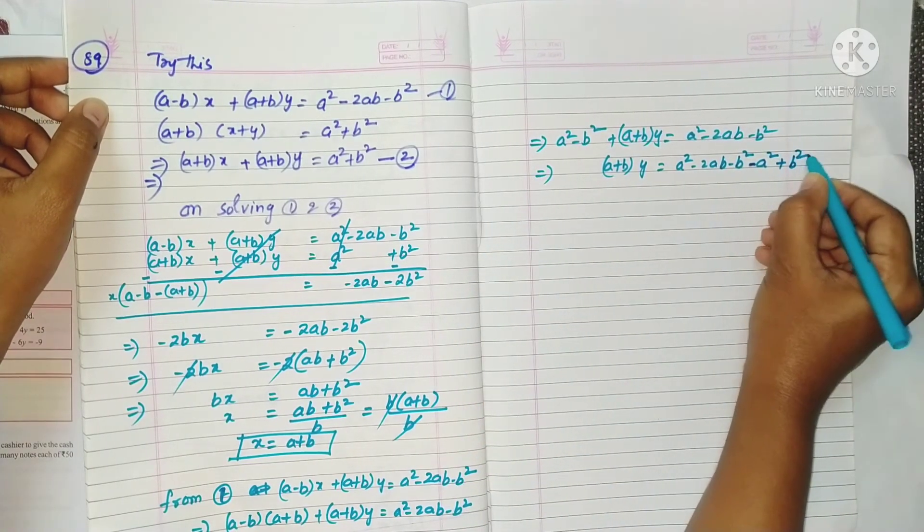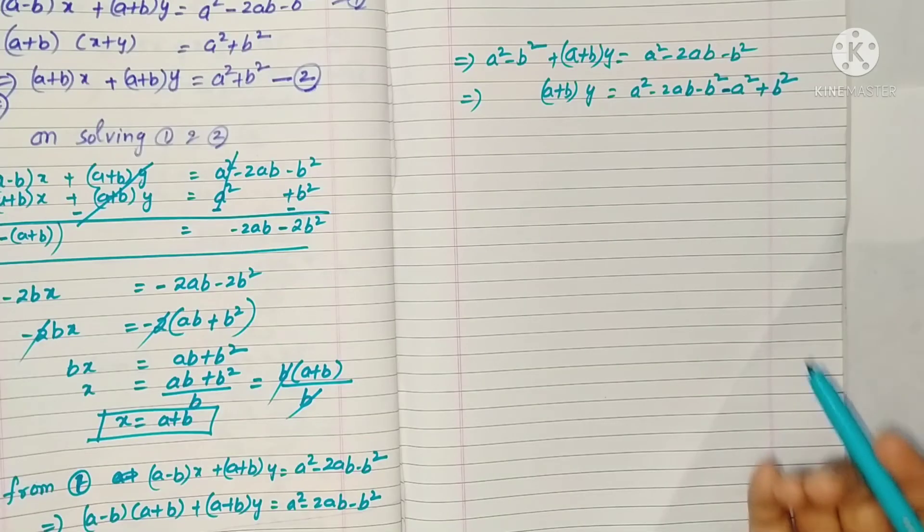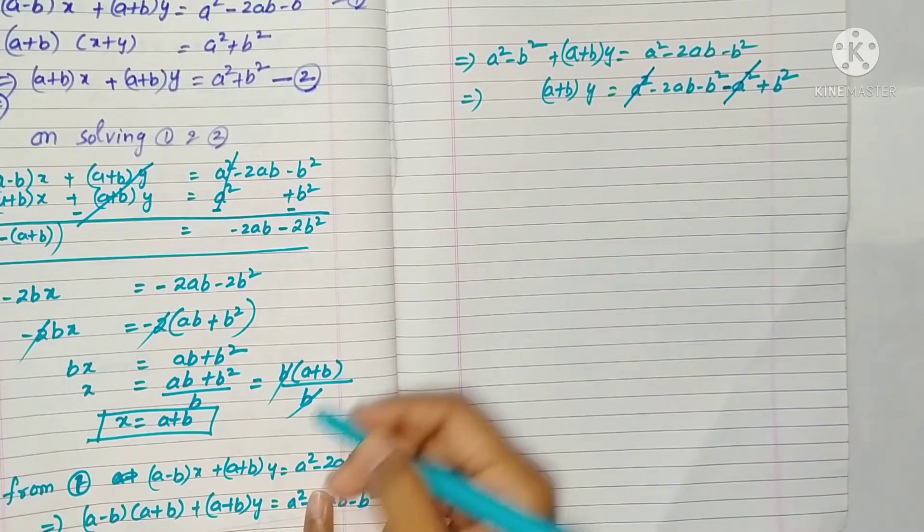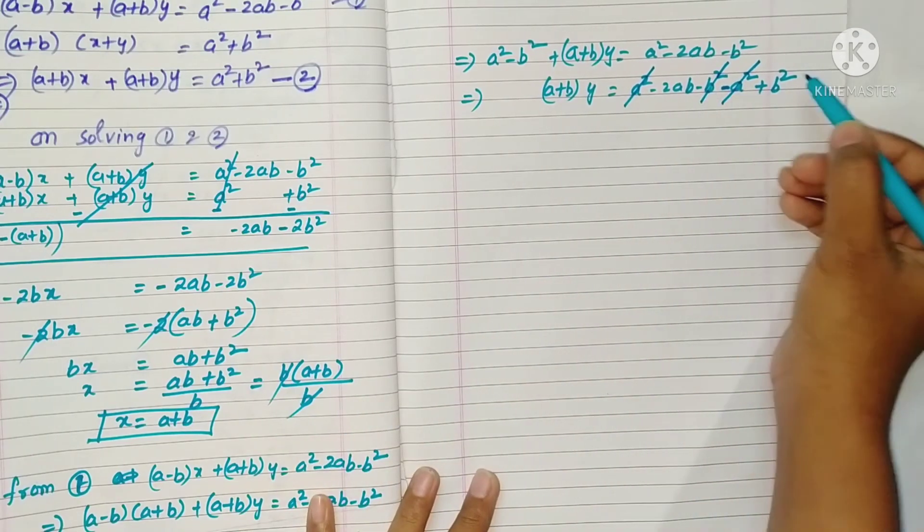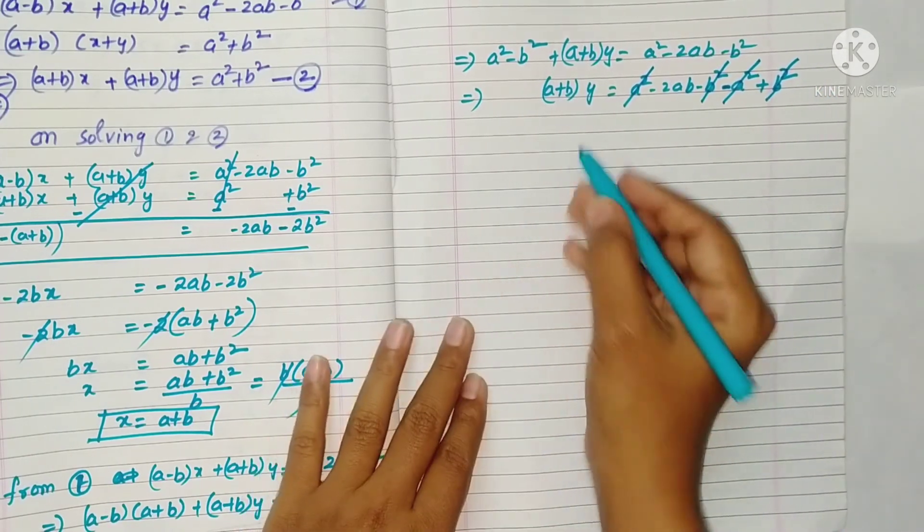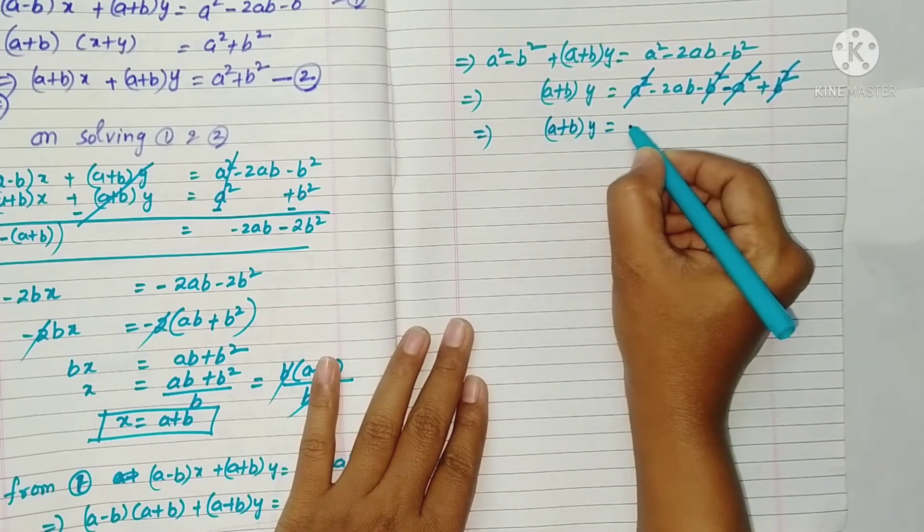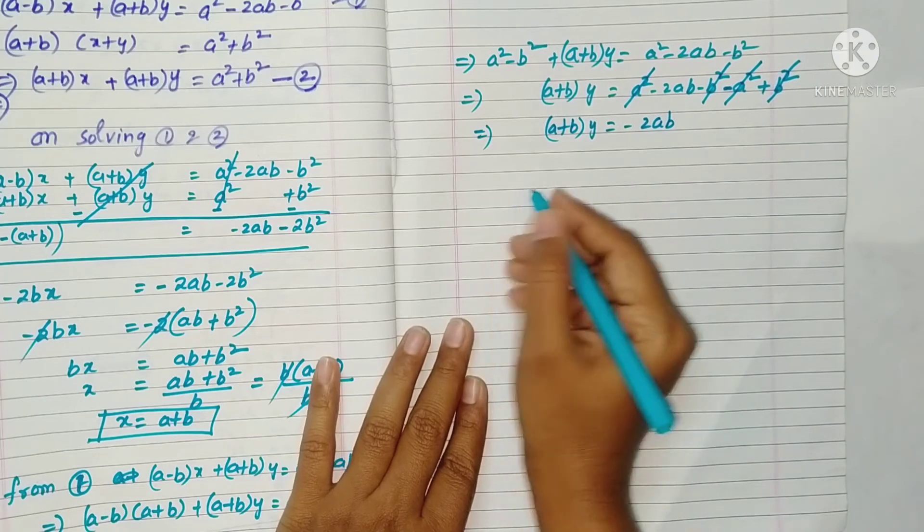So now plus a² minus a² cancel. Minus b² plus b² cancel. So remaining, (a+b)y is equal to minus 2ab.